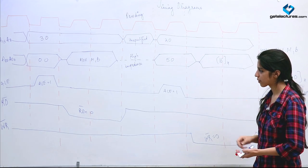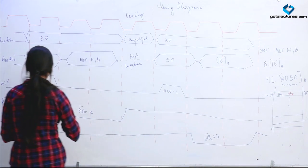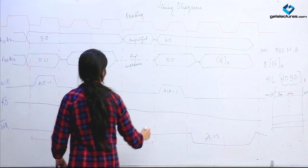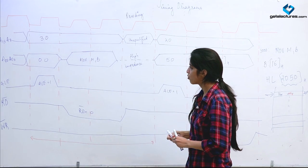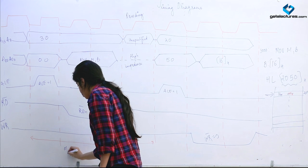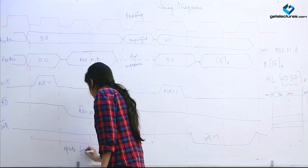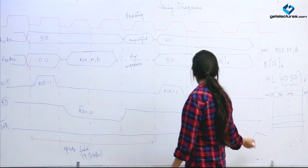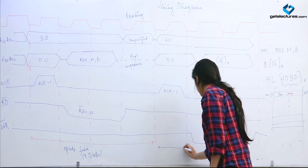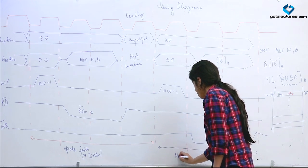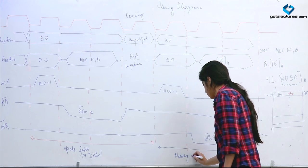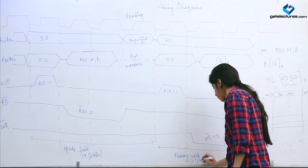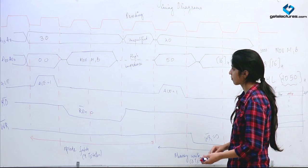This is the timing diagram for memory write. The first 4 T-states are used for opcode fetch — fetching MOV M, B takes 4 T-states. The next 3 T-states are used for memory write. So memory write uses 3 T-states.